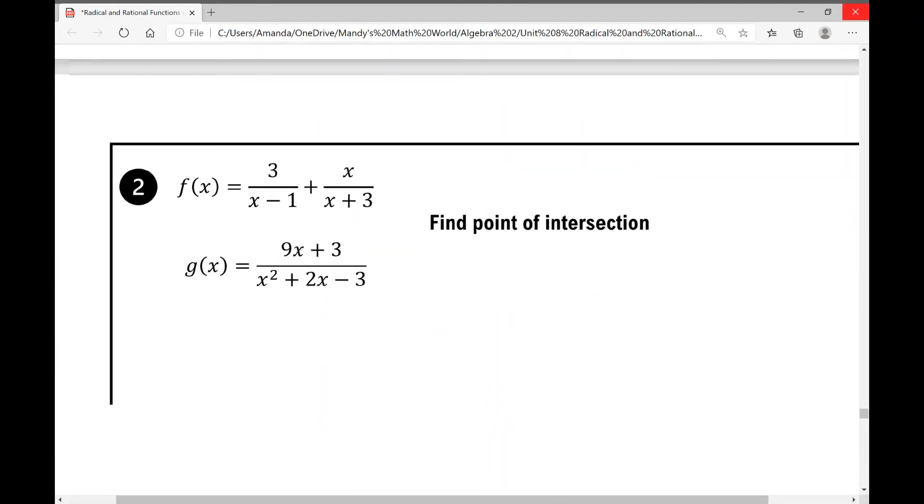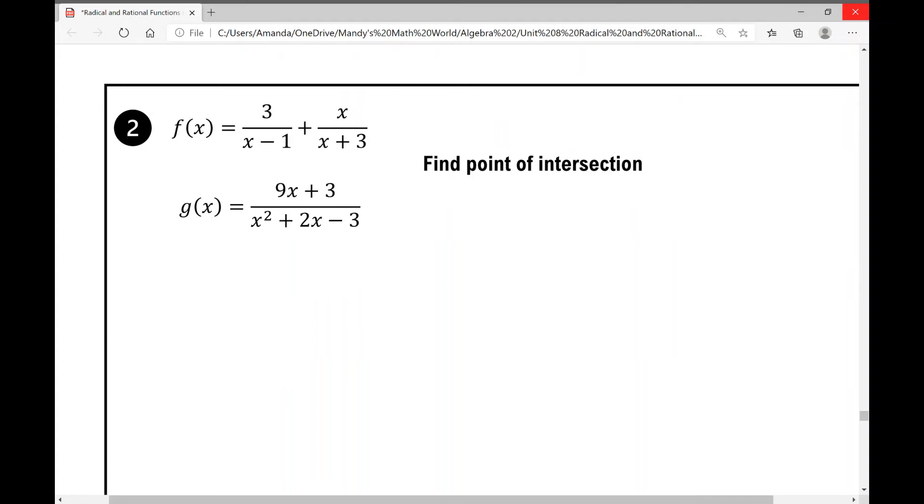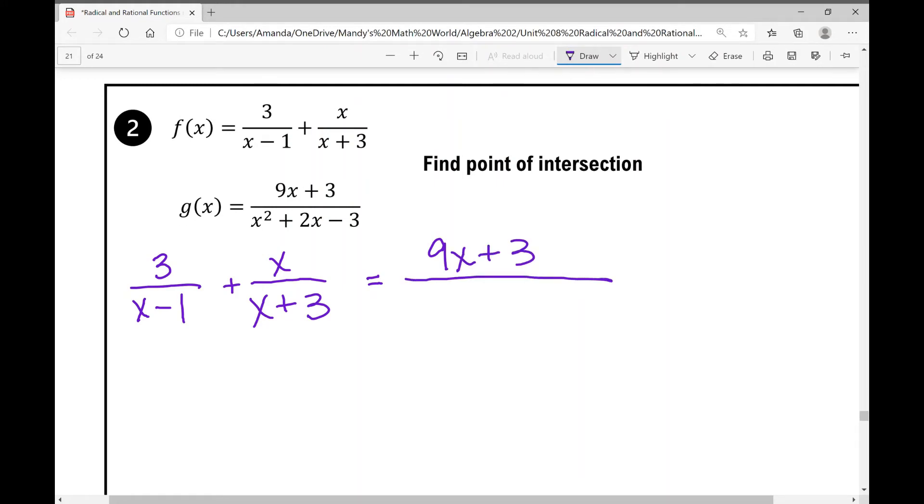In example number 2, I have two functions, f of x and g of x, and I'm asked to find the point of intersection. So again, I'm going to set these two functions equal to each other. So 3 over x minus 1 plus x over x plus 3 equals 9x plus 3 over, and if I go ahead and factor this, I can factor that denominator as x plus 3 times x minus 1, right? Because 3 times negative 1 is negative 3, and 3 plus negative 1 is positive 2. So we factored it.